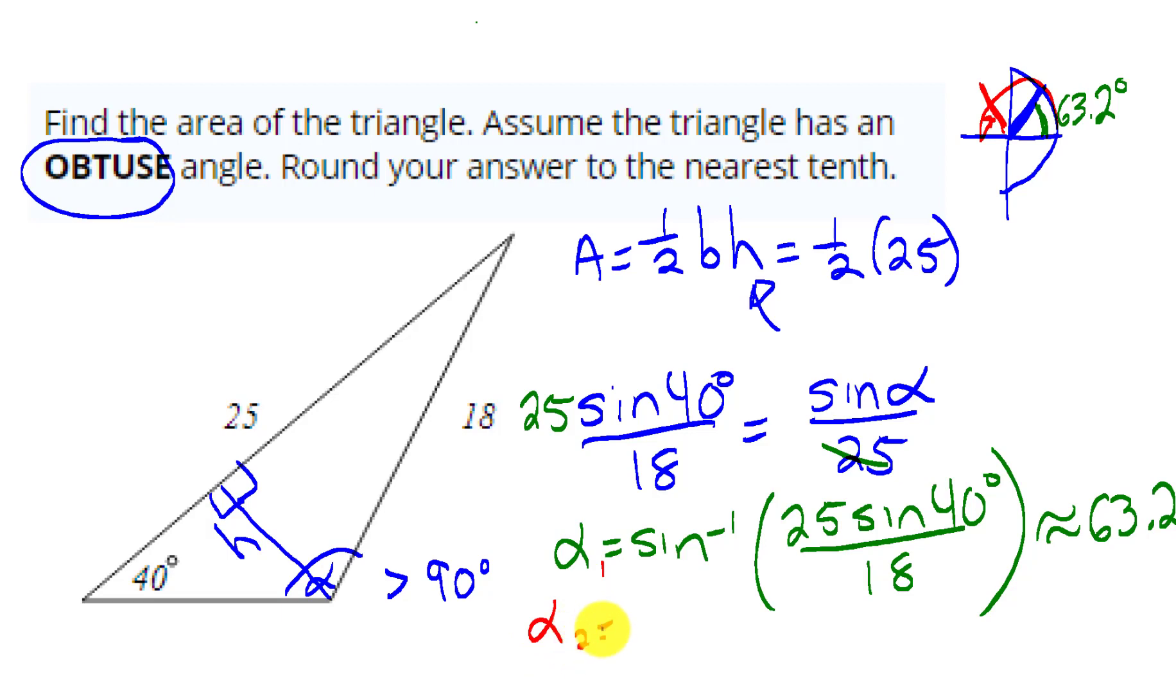So this was alpha 1, and alpha 2 is 116.8. That's the one we want here because we need the obtuse angle.